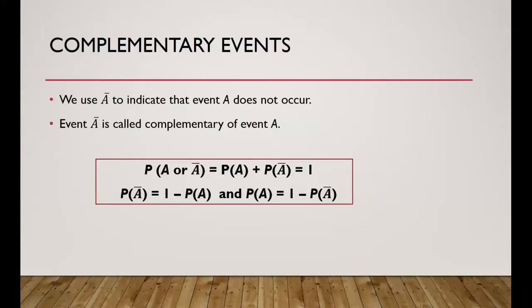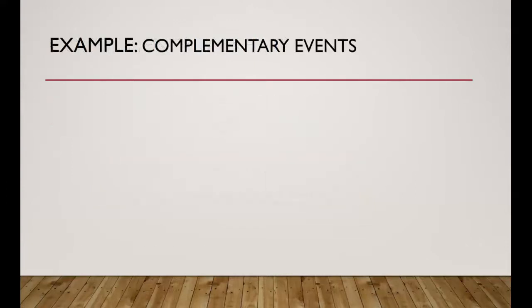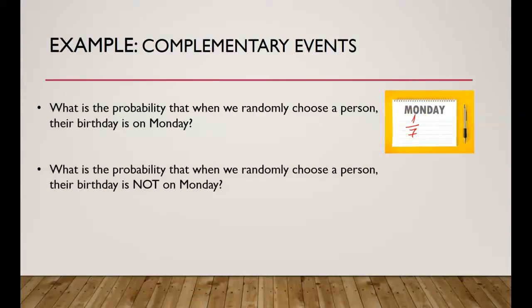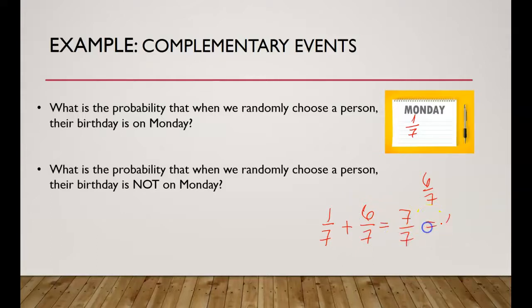To better understand complementary events, consider this example: What is the probability that a randomly chosen person's birthday is on Monday? There is 1 Monday out of 7 days. The probability their birthday is not on Monday is 6 out of 7. Together, 1/7 plus 6/7 equals 7/7, or 1 full week — confirming they are complementary events.